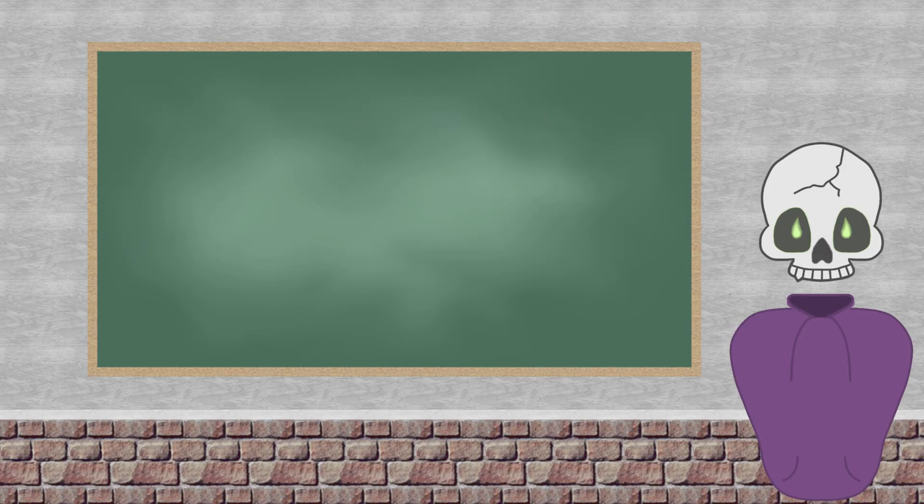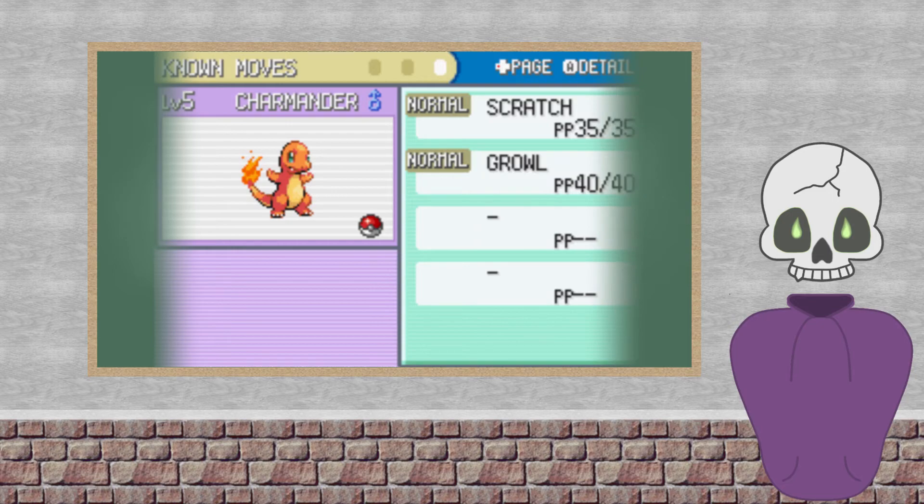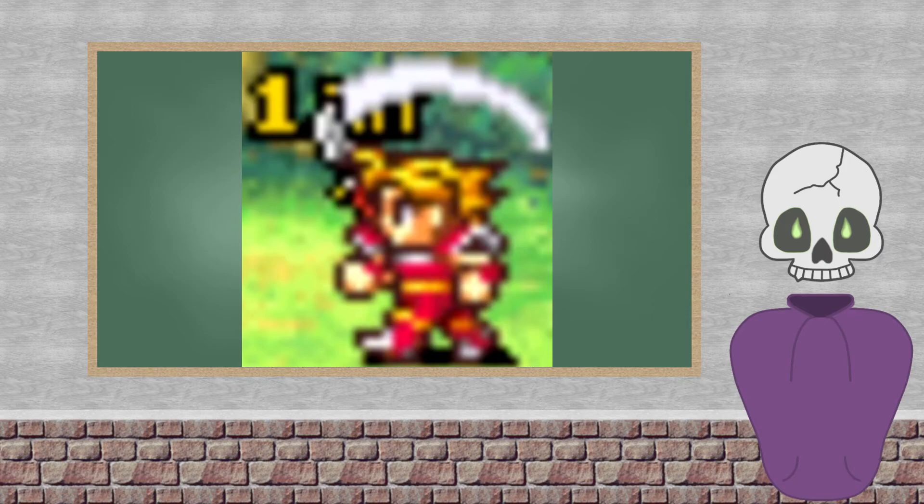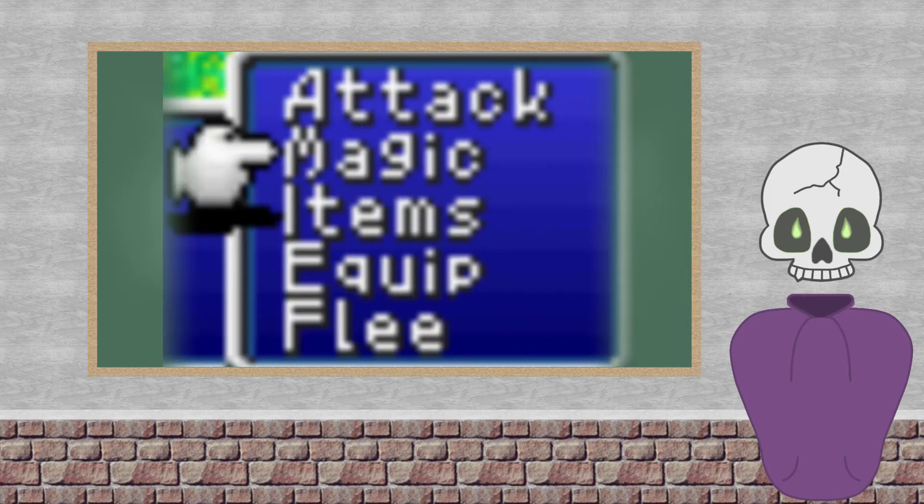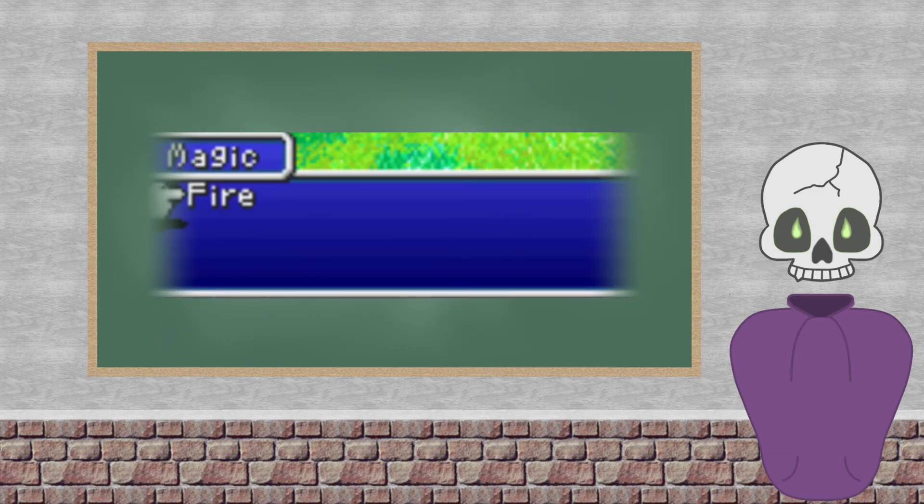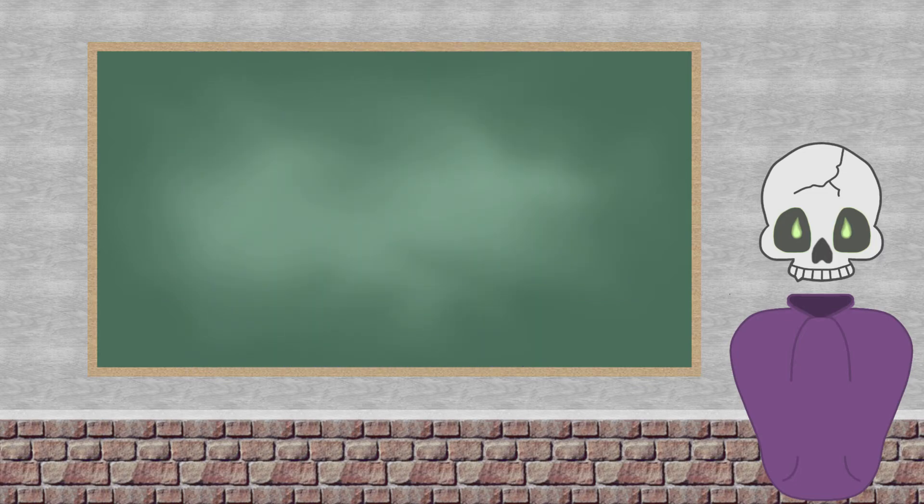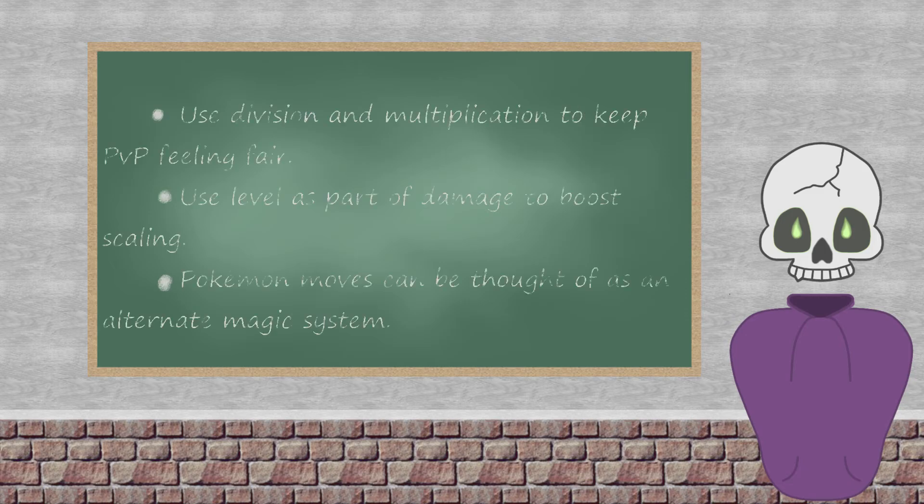Pokemon is pretty unique in that it uses a move system instead of everyone having a generic fight option that attacks with a weapon. This is more comparable to magic in most RPGs, where each move or spell has a base power that is further boosted by the user's magic stat. Just like how fire loses its power after gaining new spells like Fira and Firaga, ember becomes similarly useless compared to flamethrower and fire blast. If you're building a magic system in your game, don't be afraid to consider Pokemon an inspiration.